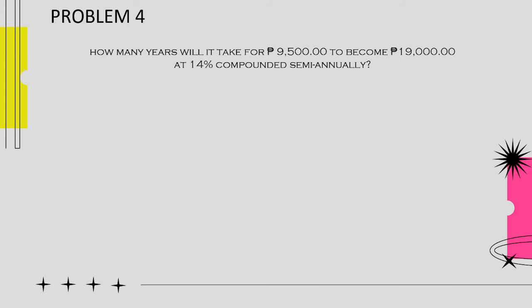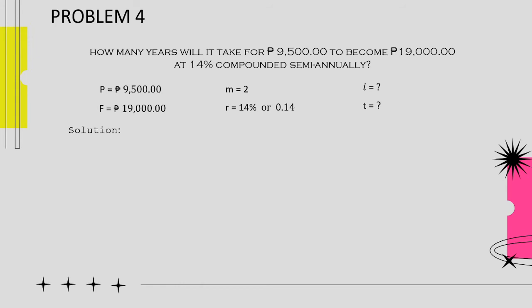Fourth example: How many years will it take for P9,500 to become P19,000 at 14% compounded semi-annually? We have the given: present value P9,500, maturity value P19,000, conversion period 2, and rate 14%, which converts to 0.14 as a decimal. Divide 0.14 by 2 to find the periodic rate: 0.14 divided by 2 equals 0.07.